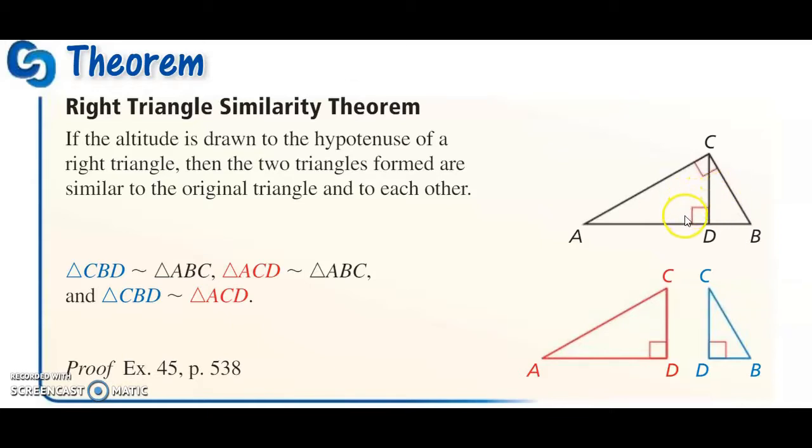The problem is they're similar but not facing the same way. We need to line them up so we know which angle matches up with which. We have triangle BCD, triangle ACD, and the bigger triangle ABC. We're going to keep all those straight using an index card.